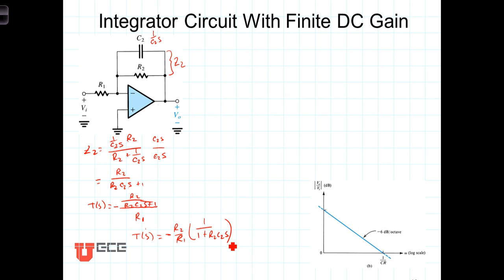And in this form we can recognize that this is of the form of that single time constant circuit or a low-pass filter. It's of the form K over 1 plus S over omega-naught, where K is equal to negative R2 over R1 and omega-naught is equal to 1 over R2 C2.